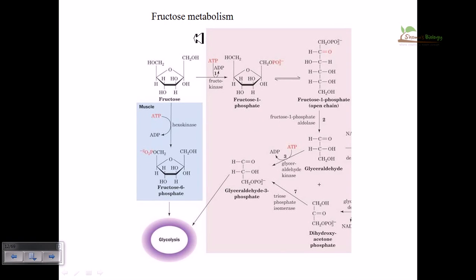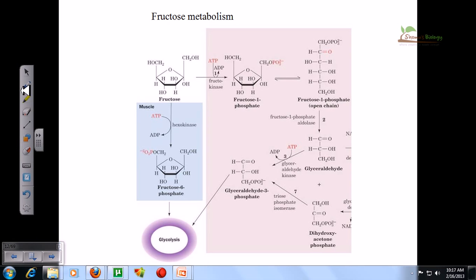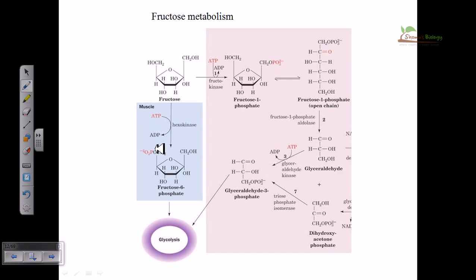Welcome back. In this video we'll be talking about fructose metabolism. Fructose metabolism can be carried out in two different ways, and both ways are effective. One way is very simple, another is more complicated because it involves many different stages. In metabolic processes, intermediates play the most important role, linking and controlling all the stages together and helping to establish control systems.